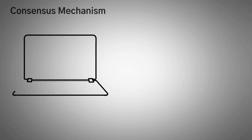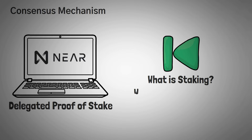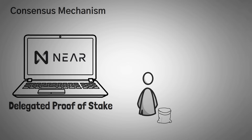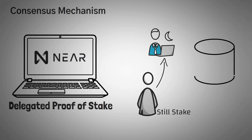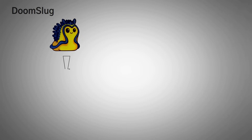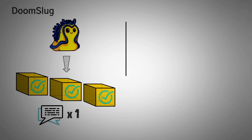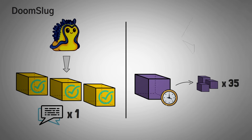First off, their consensus mechanism. NEAR is a blockchain that uses the Delegated Proof-of-Stake consensus mechanism. If you don't know what Proof-of-Stake is, we've covered it extensively in two of our other videos. The Delegated part basically means if you don't have the coins or computer parts to set up your own validator node, you lend your coins to someone else who can. Their specific Proof-of-Stake protocol is called Doomslug, which allows them to achieve practical finality after just one round of communication, instead of waiting for 35 extra blocks like you do in Ethereum.